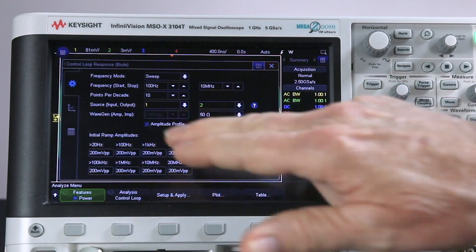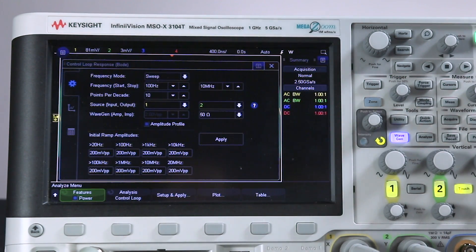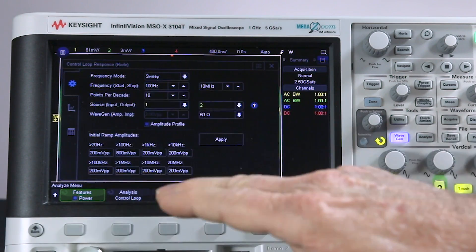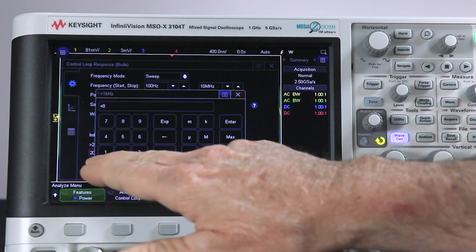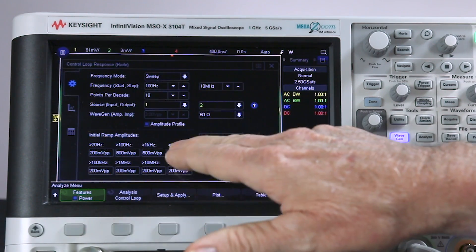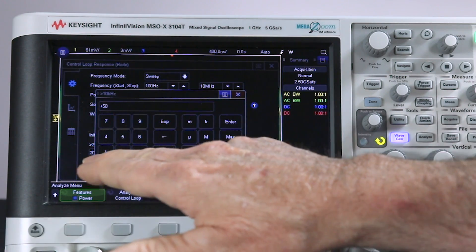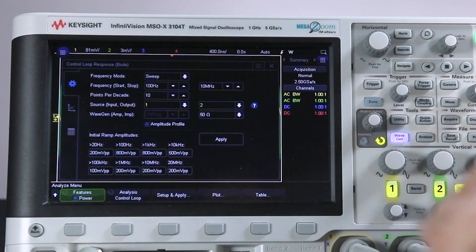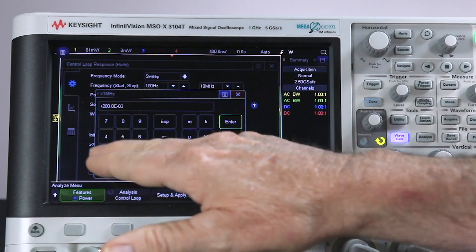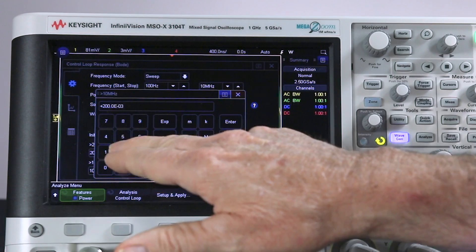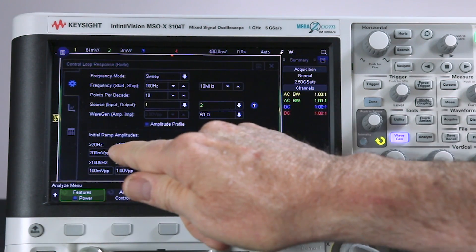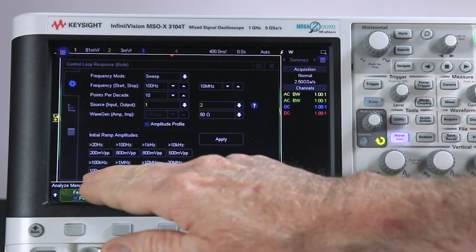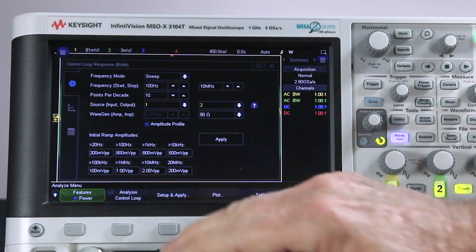This is where you can set amplitudes for different frequency ranges. So I've already gone through the process. I'm going to start at about 800 millivolts at 100 hertz. I'm going to keep it constant through that decade up to one kilohertz. Then at 10 kilohertz, I'm going to ramp down to about a half a volt. And then at 100 kilohertz, I'm going to ramp all the way down to 100 millivolts. Now I'm going to ramp back up. Let's go one volt at one megahertz and two volts at 10 megahertz.